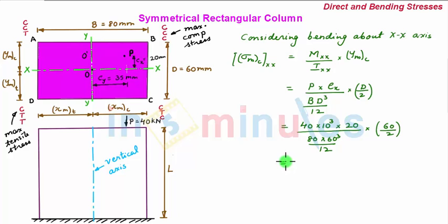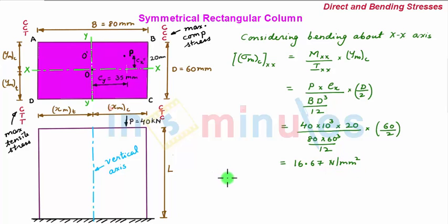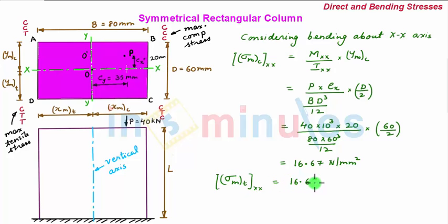Upon solving, we get sigma_max in compression as 16.67 N/mm². Due to symmetry, sigma_max in tension is also equal to the same value, 16.67 N/mm².